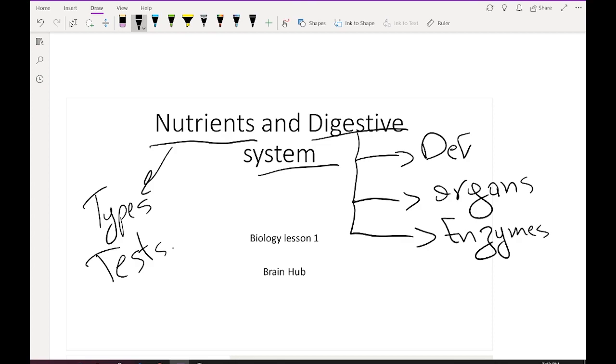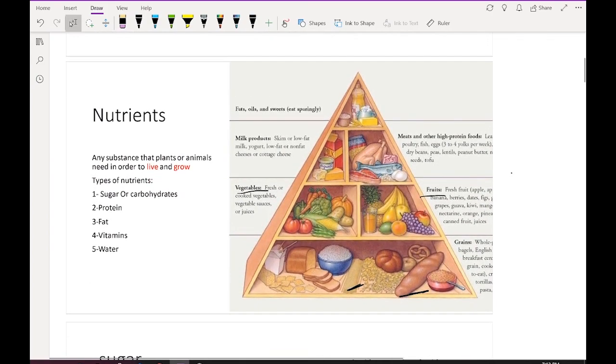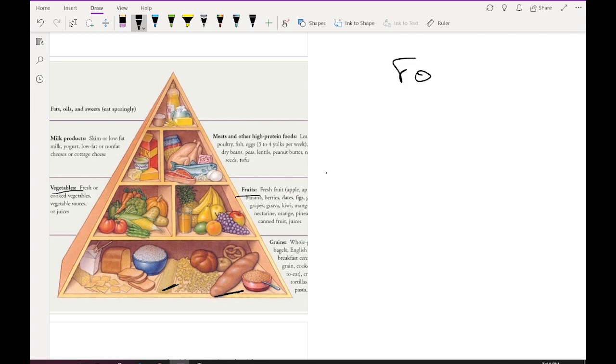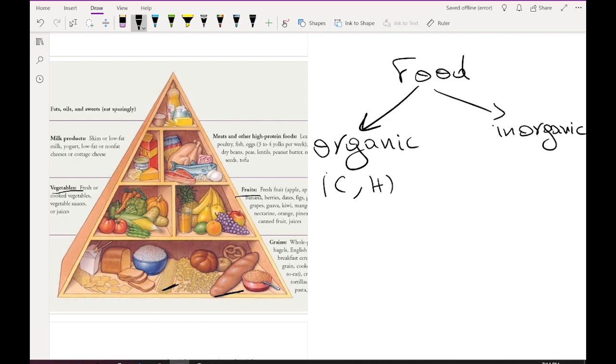So let's start with nutrients. What are nutrients? They are any substance that plants or animals need in order to live and grow. Types of nutrients are sugar, protein, fat, vitamins, and water. We can divide food into two kinds: organic, mainly composed of carbon and hydrogen, and inorganic.